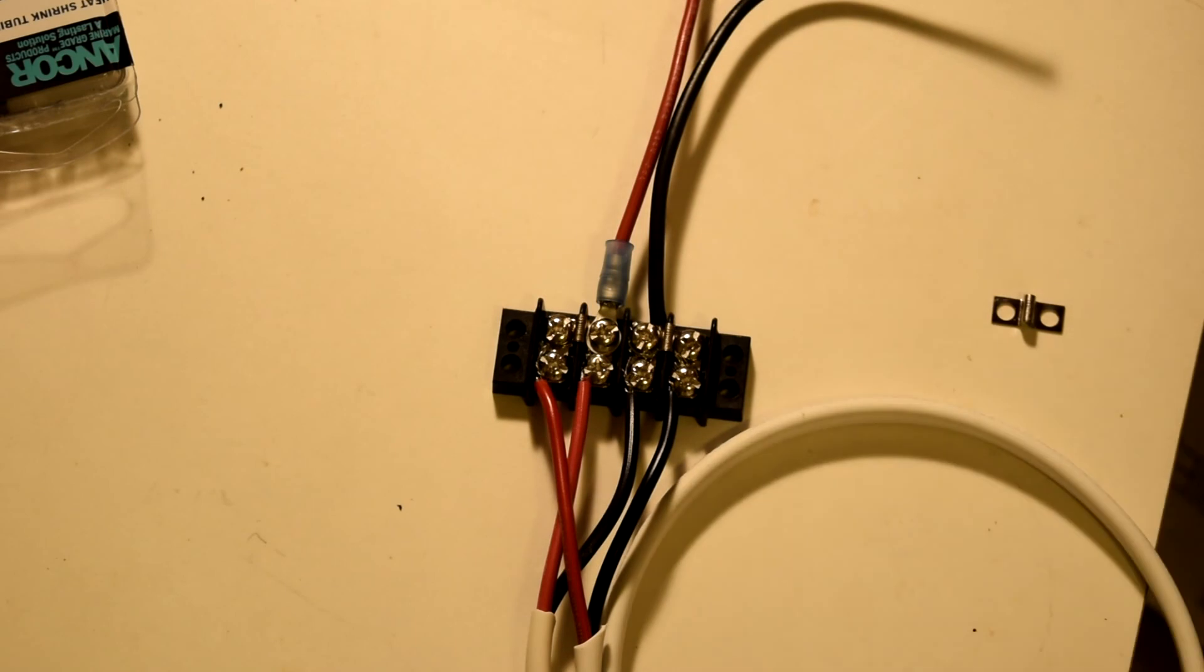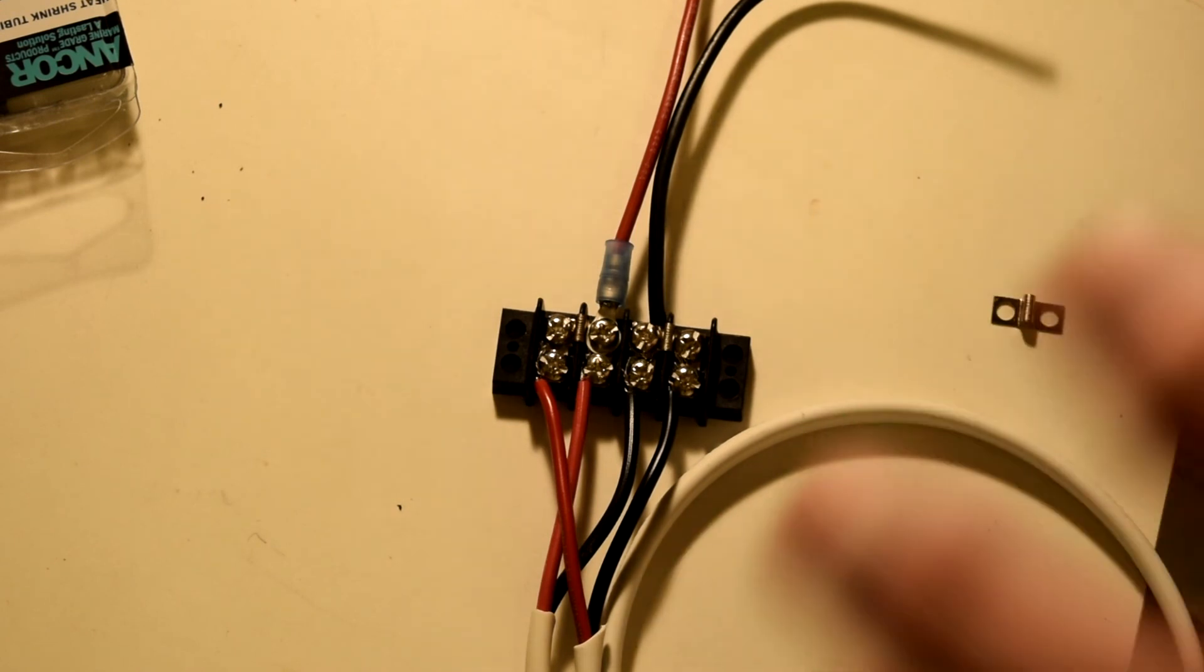So anyway this just illustrates how to go about connecting multiple solar panels to one solar charge controller. The only thing you want to be careful of is make sure that your solar panels are matched. Only connect panels of the same voltage rating and ideally the same wattage.